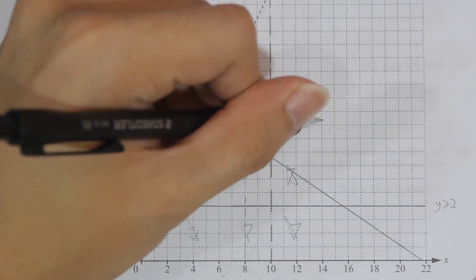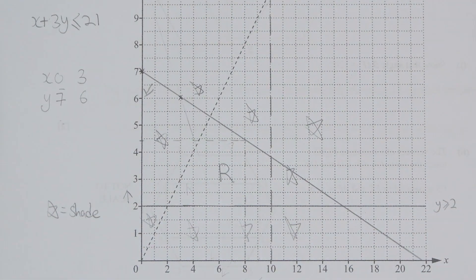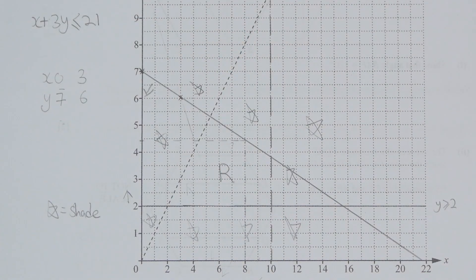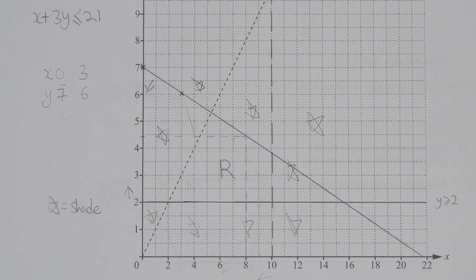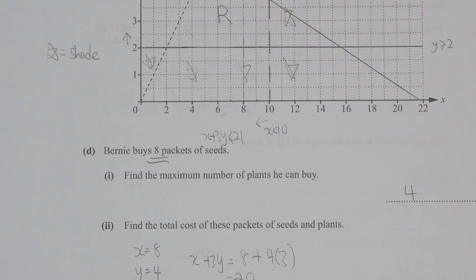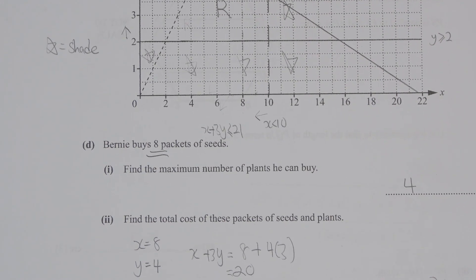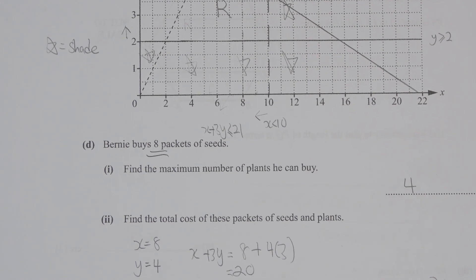Since there's no 4.4 or 4.5 packets, you're required to round it down to 4. So the maximum number of plants he can buy will be 4, and the final cost will be 8 plus 4 multiplied by 3, giving 20 as the final answer.